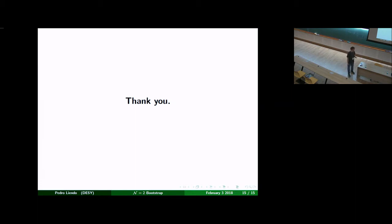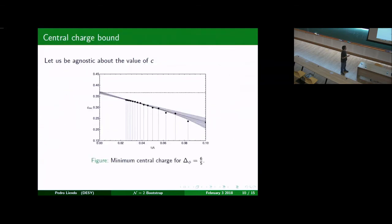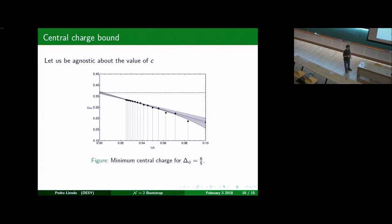Question about computing power: We measure things in terms of the parameter lambda — the number of derivatives. We got to lambda equals 40. This was done on computing clusters — no way you can do this on a laptop. Germans have a lot of clusters, so we're good.